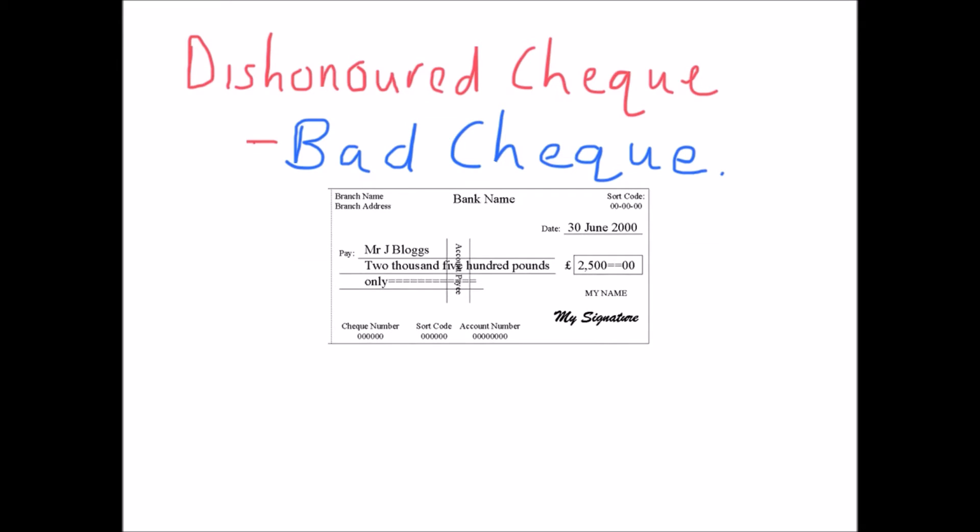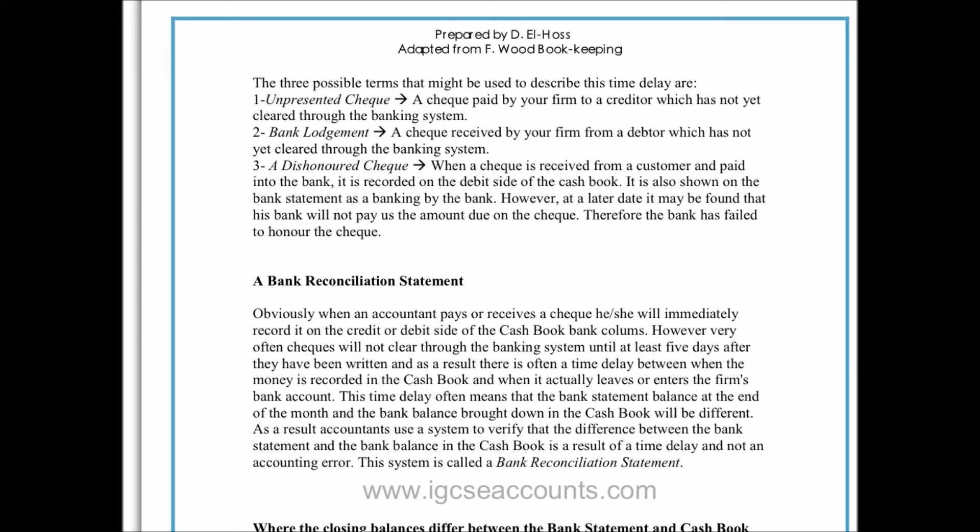It's worth mentioning that some customers will write bad checks — also known in accounting terms as a dishonoured check. That's where a customer has written a check, it's gone through the banking system, and by the time our bank gets to their bank to take the money out of their account, there is actually no money there. That would be listed on your bank statement, and our accountant would only find out that the check was a bad one once the money had been taken away from the bank account, which would show up on the bank statement. Those items need to be updated in our cash book — added on the debit or credit side depending on whether they were payments or money coming in.